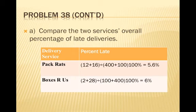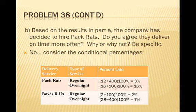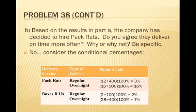But do you agree they deliver on time more often? Let's look at the individual conditional rates. For regular packages: Pack Rats had 12 late out of 400, which is 3%. For overnight packages: Pack Rats had 16 late out of 100, which is 16%. For Boxes R Us regular packages: 2 late out of 100 is 2%. For Boxes R Us overnight packages: 28 late out of 400 is 7%.